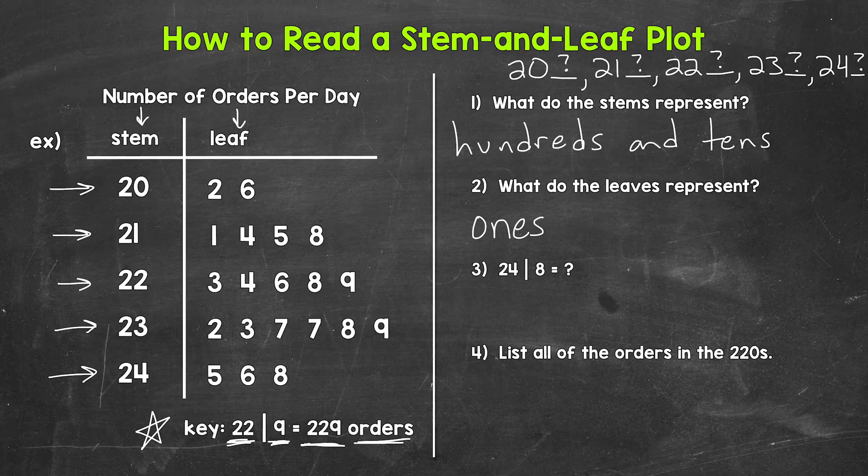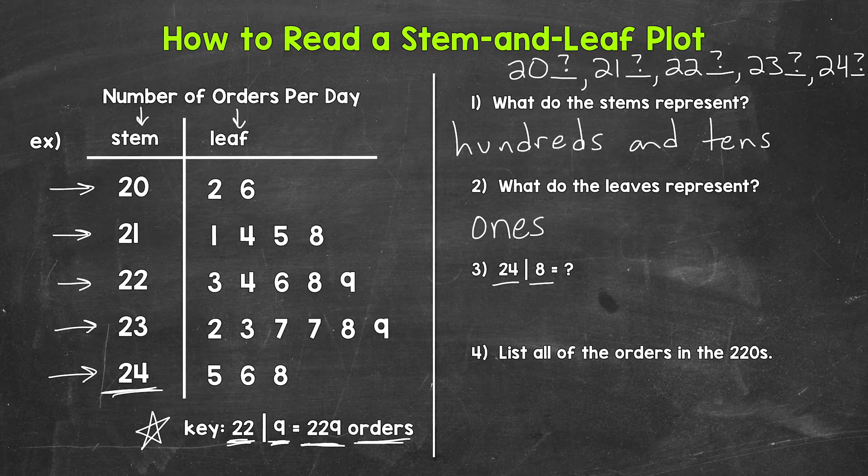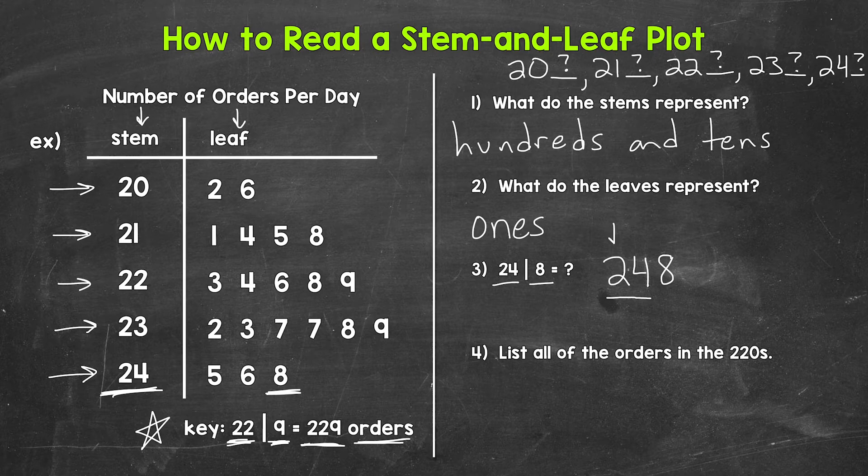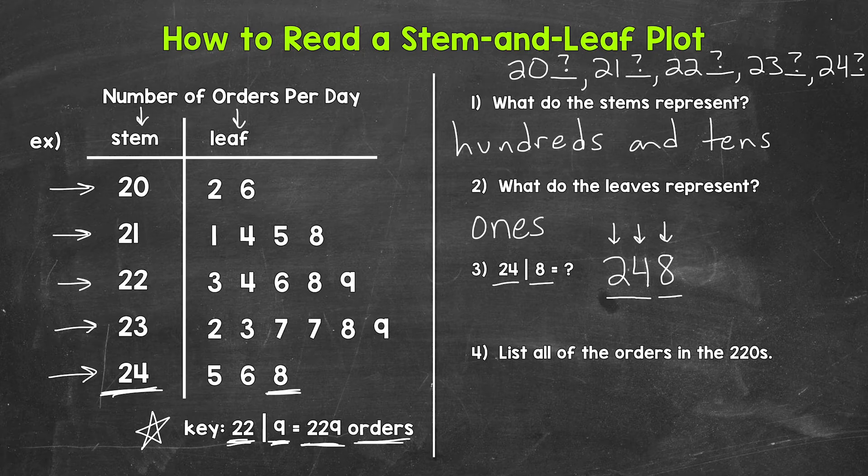Let's put this all together and look at number three where we have a stem of 24 and a leaf of eight. So looking at the stem and leaf plot, stem of 24, leaf of eight. So the hundreds, tens, and then ones, that gives us 248. So again, stem of 24, the hundreds place, the tens place, and then a leaf of eight, the ones place. So we put the stem and the leaf together and we get 248.